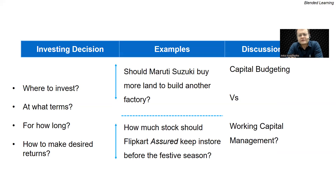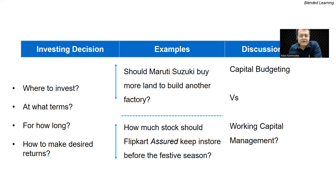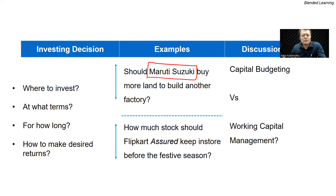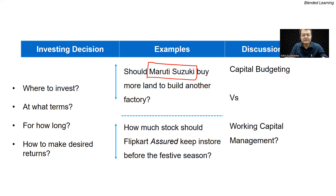For a corporate such as Maruti Suzuki or a Flipkart or any other corporate, the decisions they take can be divided into two broad phases: short-term investment decisions versus long-term investment decisions. I've taken the example of Maruti Suzuki, India's largest automotive player, which is evaluating a decision to buy another piece of land — not for trading, but to build a factory on it. For Maruti Suzuki, this investment will have long-term ramifications.